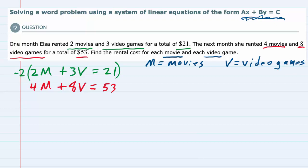That would give me a negative 4M and allow those to cancel out. So if I distribute that negative 2, that would be negative 2 times 2M, negative 4M, negative 2 times a plus 3V would be minus a 6V, and then negative 2 times the 21 would give me a negative 42.